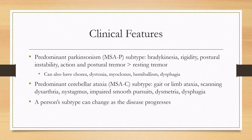There are two main motor subtypes. The predominant Parkinsonism subtype, or MSA-P, features prominent bradykinesia, rigidity, and postural instability. There seems to be more commonly an action or postural tremor as opposed to a resting tremor. Because the basal ganglia are affected, you can also see other symptoms such as chorea, dystonia, myoclonus, hemiballism, and sometimes dysphagia as well.